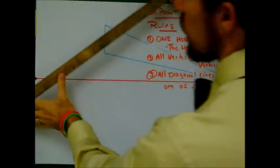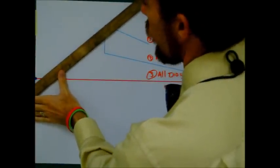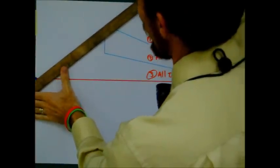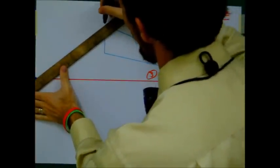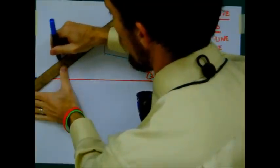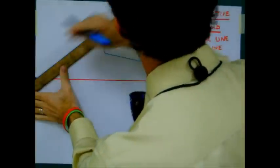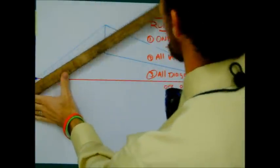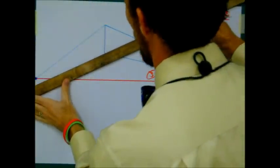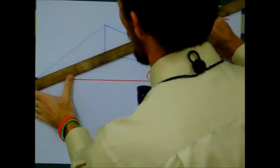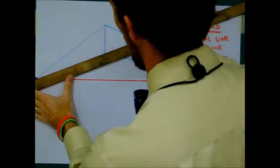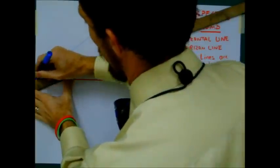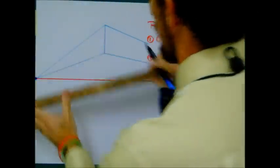Now from the top of that vertical line, we're going to draw it to our left vanishing point, all the way down. And then from the bottom, all the way down to that vanishing point.